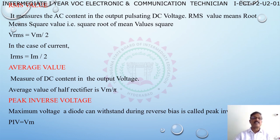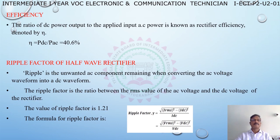Peak inverse voltage: the maximum voltage a diode can withstand during reverse bias is called peak inverse voltage, denoted PIV, and is equal to Vm. Efficiency: the ratio of DC power output to the applied input AC power is known as rectifier efficiency, denoted by eta. Eta equals P_DC divided by P_AC, which equals 40.6 percent for a half wave rectifier.